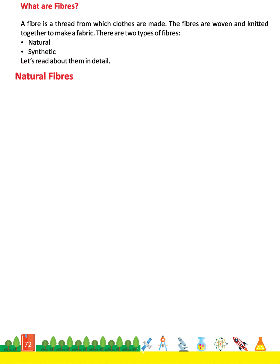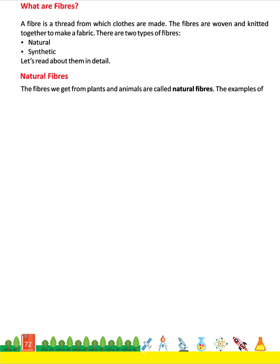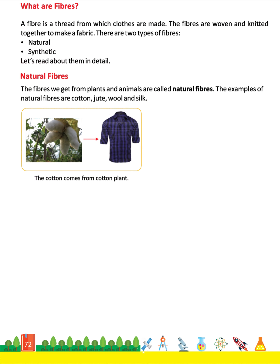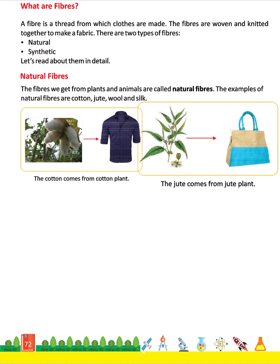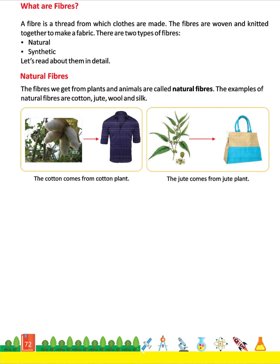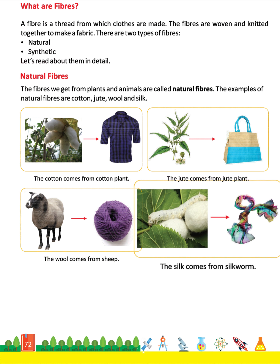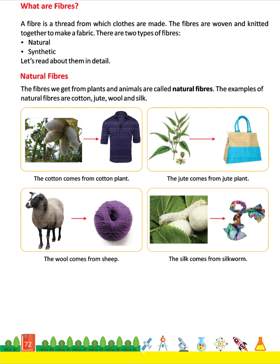Natural fibers. The fibers we get from plants and animals are called natural fibers. The examples of natural fibers are cotton, jute, wool, and silk. The cotton comes from the cotton plant. The jute comes from the jute plant. The wool comes from sheep. The silk comes from silkworm.